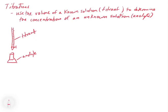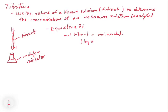Inside the analyte we usually use an indicator - something that changes color when you reach what we call the equivalence point. The equivalence point is where the moles of the titrant equal the moles of the analyte by stoichiometry. If you have a one-to-one mole ratio, the moles of titrant equal the moles of analyte. If you have a two-to-one stoichiometry, you'll need two moles of one reagent and one mole of the other to reach the equivalence point. Most often these reactions are in a one-to-one ratio.